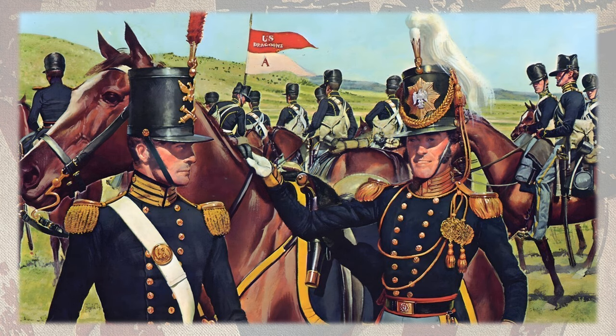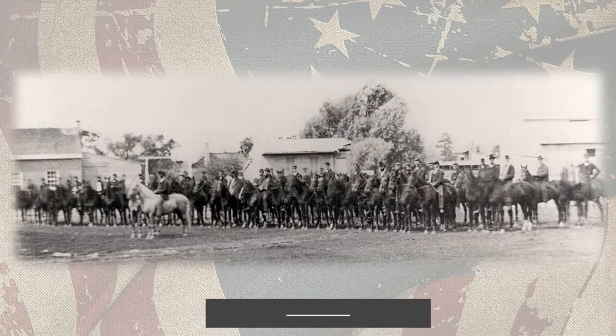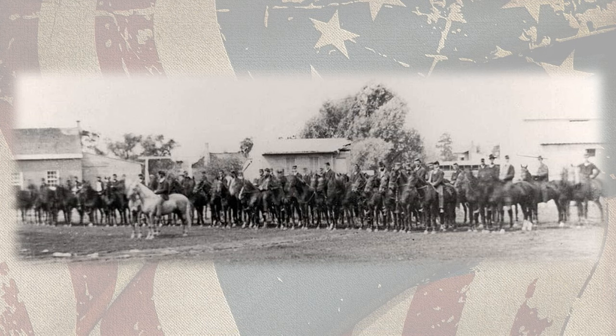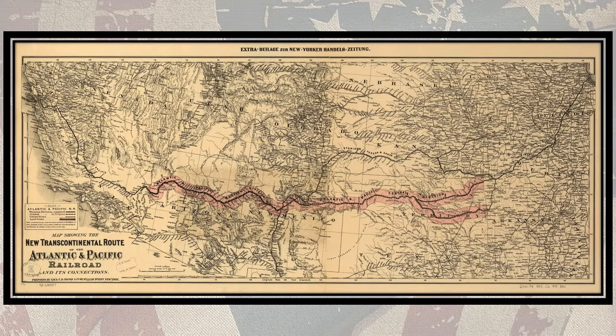Following his graduation, Army officials brevetted Stanley as a second lieutenant and assigned him to the 2nd U.S. Dragoons. After nine months of training at the Cavalry School for Practice in Carlisle, Pennsylvania, Stanley served on a surveying party charting the route for the Pacific Railroad from Arkansas to California.